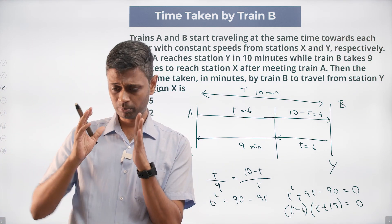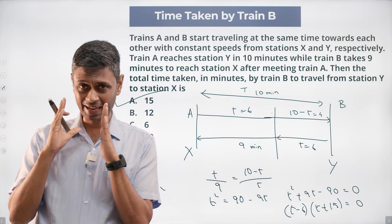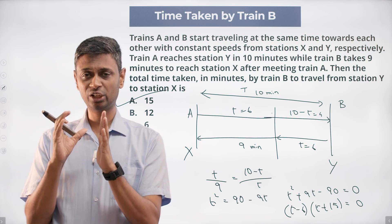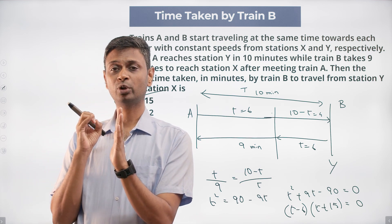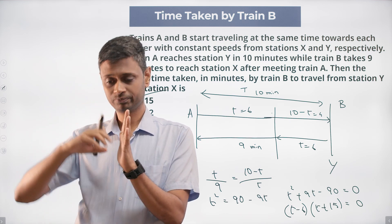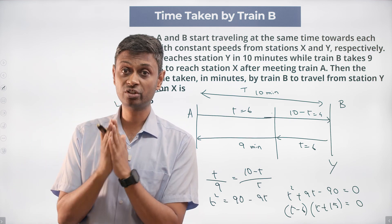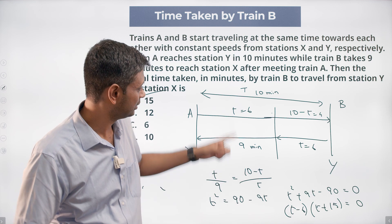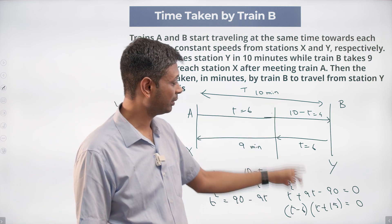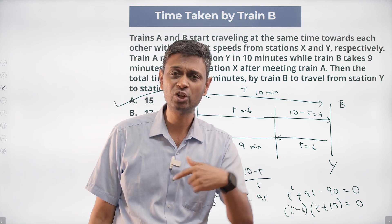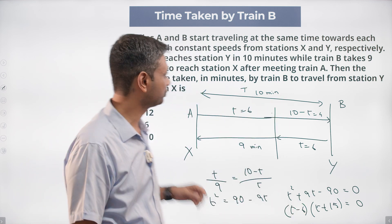The time taken by Train A and Train B to travel equal distances is the same, confirming the ratio holds: 4/6 equals 6/9, which checks out correctly.